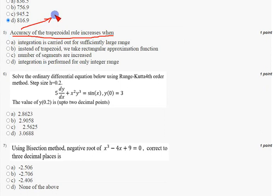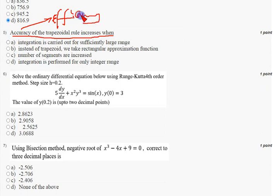Coming to the fifth question: accuracy of the trapezoidal rule increases when — here accuracy can also be referred to as efficiency. The correct answer for the fifth question is option C: the number of segments are increased. Mark option C as the correct answer for the fifth question.